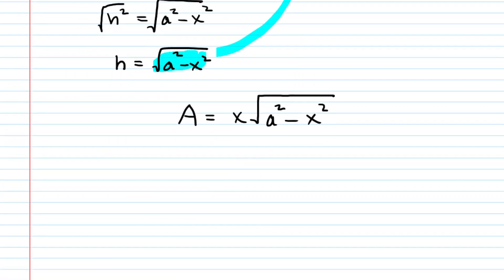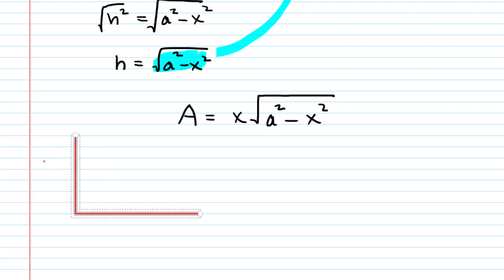This is much better because now we have the area function in terms of just a single variable X. Remember that A is not a variable — A is a constant value; we just don't happen to know what it is. We have our area equation, and we're trying to maximize it. You might want to think back to how you learned to maximize functions: we have area as a function of X, and perhaps we could graph this function. At some X value, we would have a maximum area.